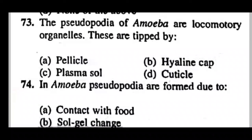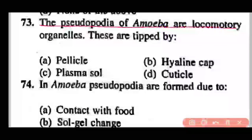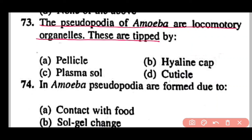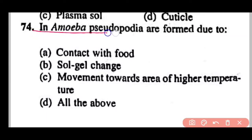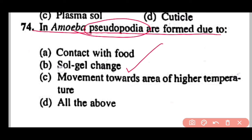Question 73: The pseudopodia of Amoeba are locomotory organelles tipped by pellicle, hyaline cap, plasma sol, or cuticle? Correct answer is option B. The pseudopodia of Amoeba are tipped or covered by hyaline cap. Question 74: In Amoeba, pseudopodia are formed due to contact with food, sol and gel exchange, or movement toward higher temperature? Correct answer is option B. Pseudopodia formation is due to sol and gel transformation.